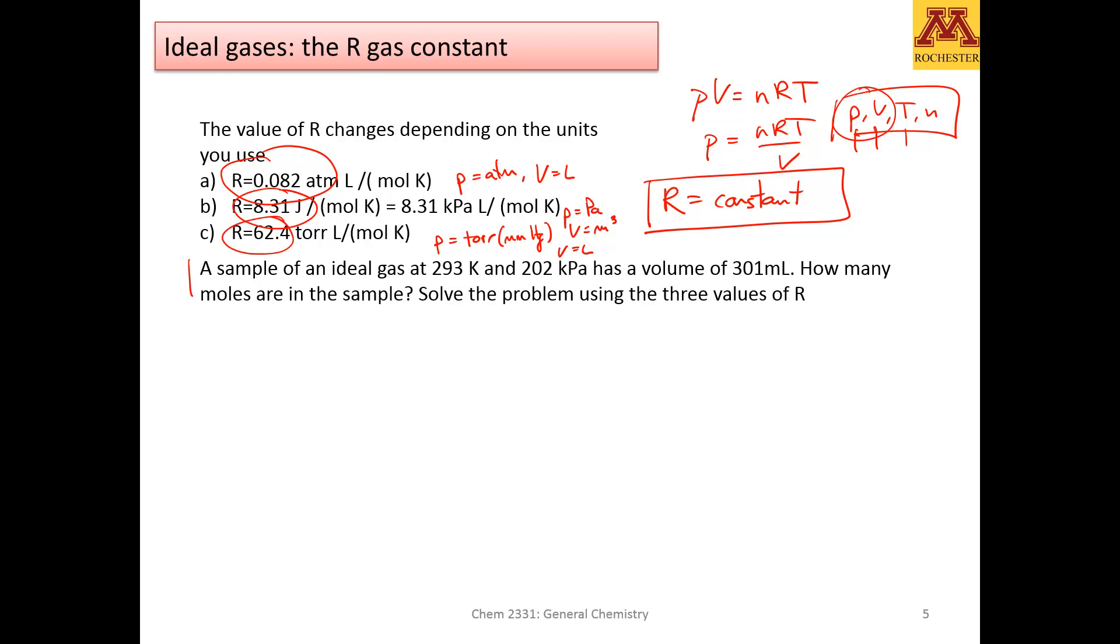In this case, a sample of an ideal gas at temperature 293 Kelvin, and you're given the pressure in 202 kilopascals, or in other words, 202 times 10 to the 3 pascals, and you're given the volume in milliliters to make things even worse. Notice that there is no value of R that includes pressure in pascals and volume in milliliters. It's asking how many moles are in the sample.